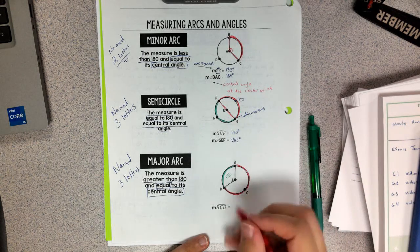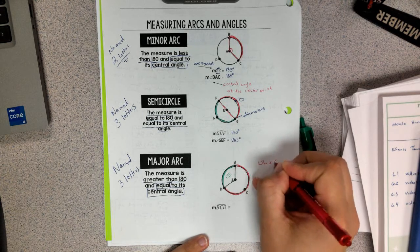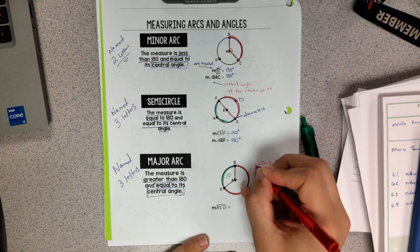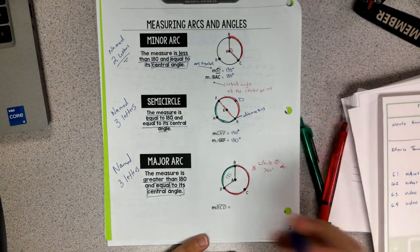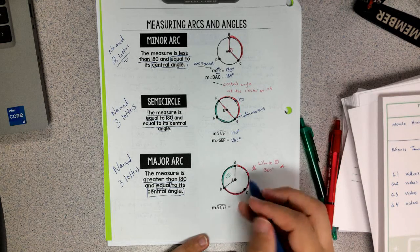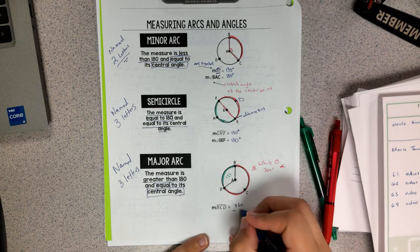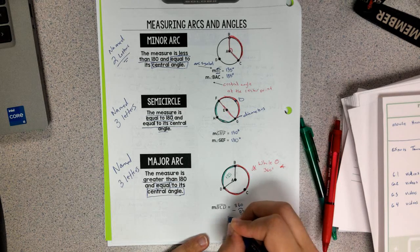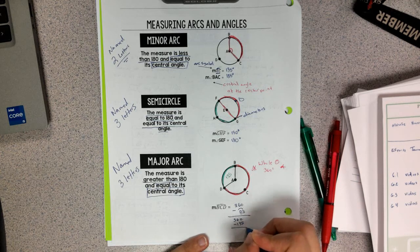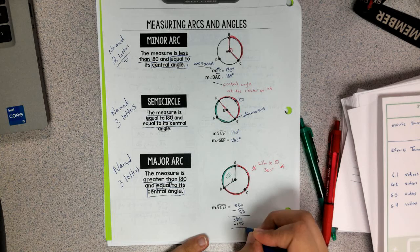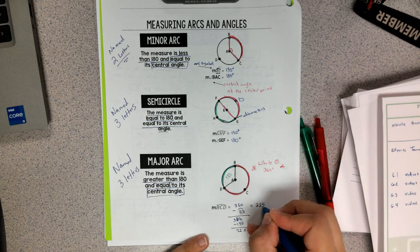Which means, in order to find this, I can take that and say that because the whole circle is 360 degrees, I can say that the major arc is going to be 360 minus the minor arc of BD to get my value, or 360 minus 135, which gives me 225 degrees.